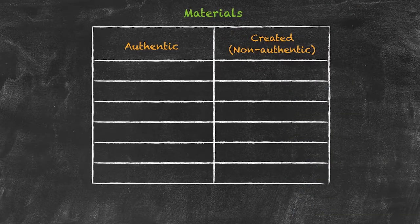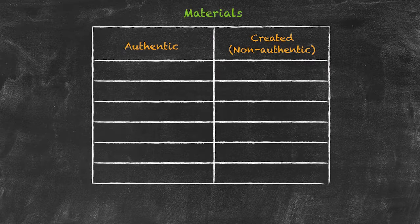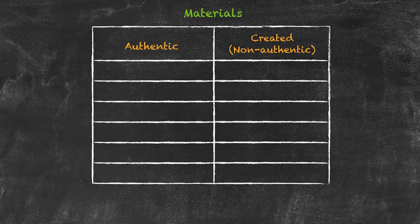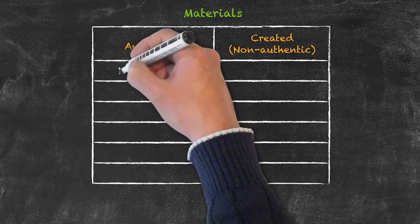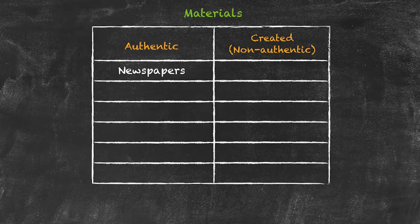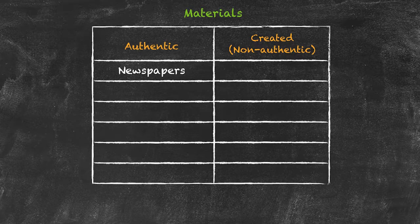Authentic materials, as the name implies, are actual materials that are created for any reason outside of the classroom. Examples of authentic materials would be things like newspapers. Those are generated for the general public and they're certainly not generated for use in the classroom. However, they can be used within the classroom.